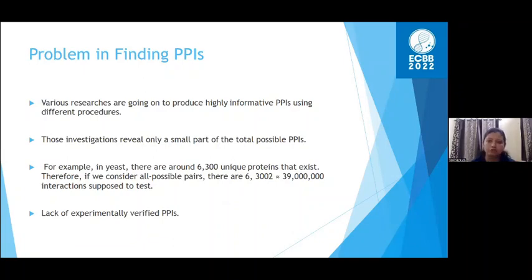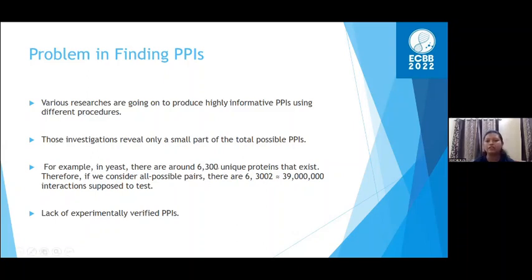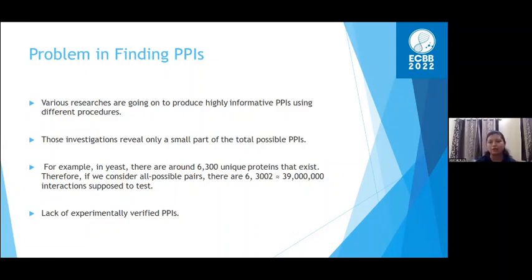Although protein-protein interactions are very important to understand disease progression, there are problems in finding them. Laboratory experiments reveal only a small part of total possible interactions. For example, in yeast there are around 6,300 unique proteins, and considering all possible pairs — 6,300 squared — gives around 39 million interactions to test. Since laboratory experiments are very costly and time-consuming, it is very difficult to test all possible interactions, especially for humans where the number of proteins is much larger.